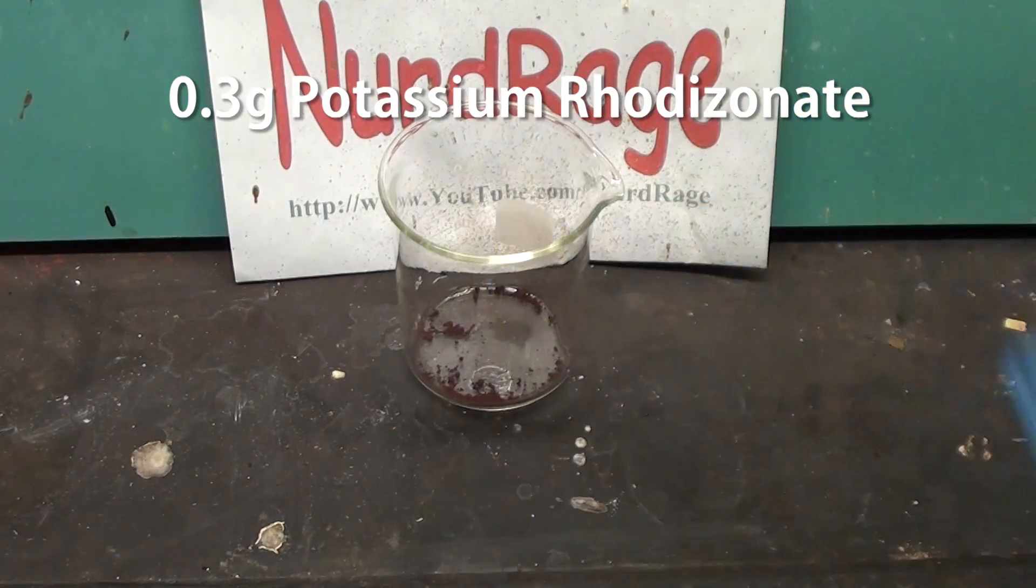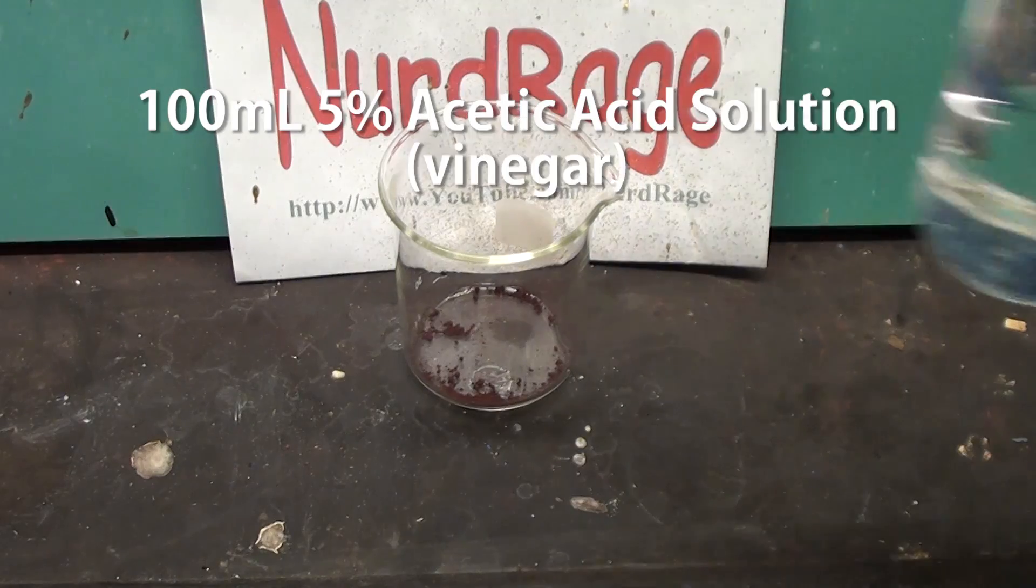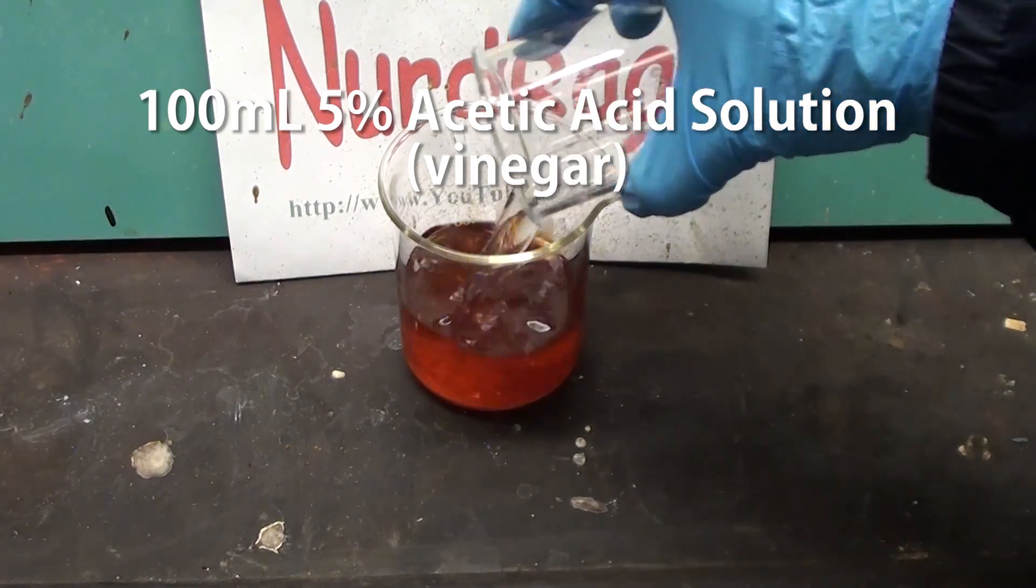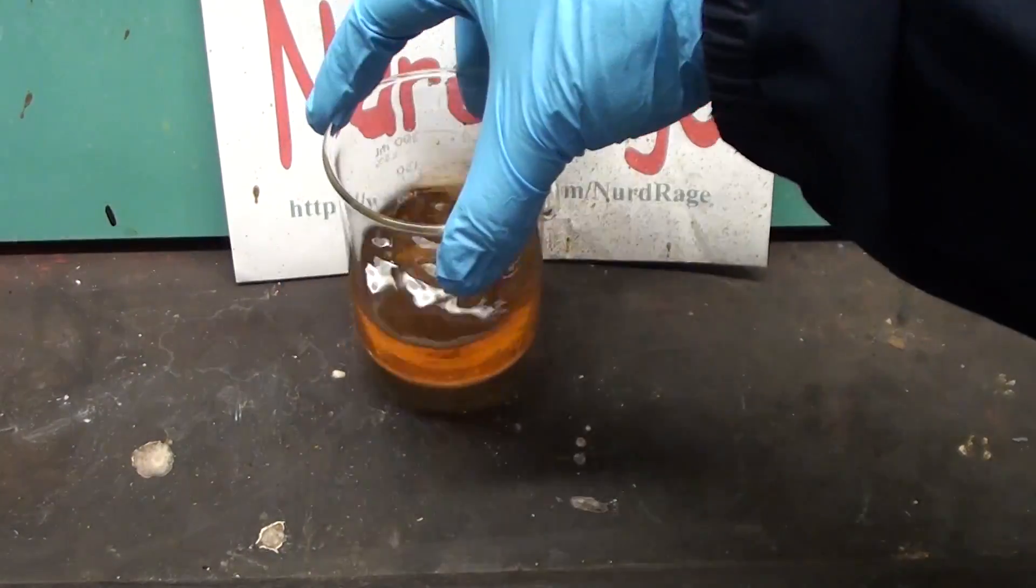First get about 0.3g of potassium rhodosinate and add to it 100mL of 5% acetic acid solution, also known as vinegar. Try and dissolve as much as you can.